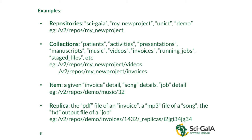You can see how this maps to the REST API structure. The endpoint will be v2/repos, and under repos you have all the repositories — like My Project, University, and so on — and then the collection. We really follow REST principles where we use path to reach resources. The item is a single record — like a song, a job, or an invoice — and is generally identified by an ID. So this REST API indicates the item with ID 32 in the music collection of the demo repository.